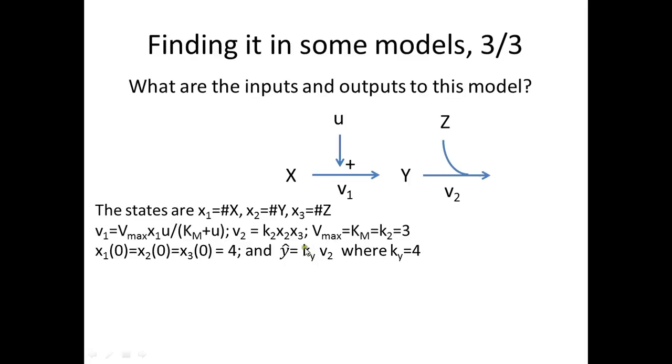We are looking for the measurement equation here, which says that we can measure v2, the reaction rate, how many reactions we have per second, times some unknown scaling constant. So the input is some kind of enzyme or catalyzer or facilitator of the first reaction, and we can measure the rate of this one times some unknown scaling constant. That's it. Now we can recognize all the components in all these three forms of writing up a model. That's the first little unit.